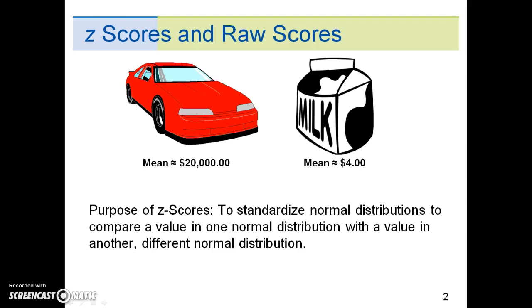The mean price of a new car is about $20,000 and the mean price of a gallon of milk is about $4. So the purpose of z-scores are to standardize normal distributions to compare a value in one normal distribution with a value in another different normal distribution.